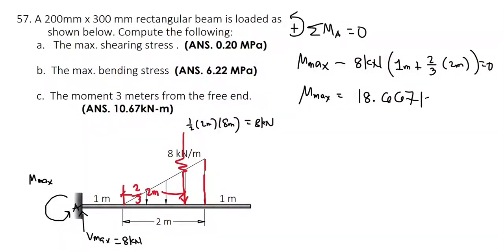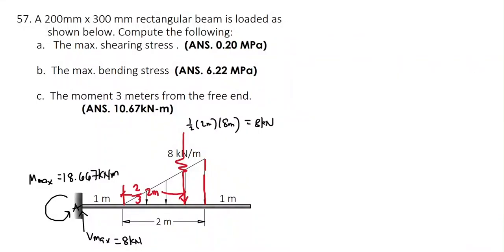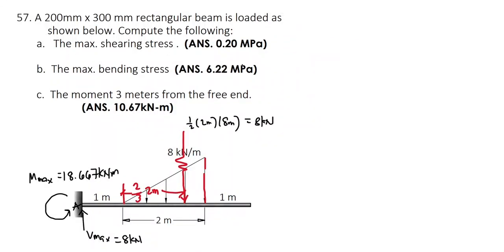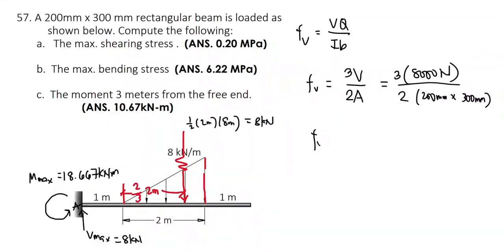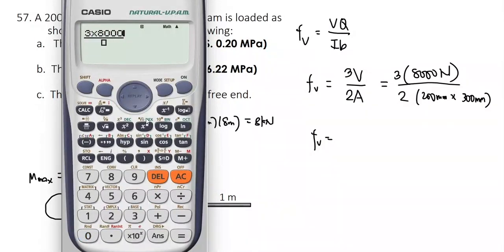Let's round this off to 3 decimal places. Now that we have our reaction at the support, we're going to solve for the maximum shearing stress. For the shearing stress, the formula is τ = VQ/IB. But since this is a rectangular beam, we can use the derived formula: maximum shearing stress equals 3V divided by 2A. That is 3 times 8,000 N divided by 2 times 200 mm times 300 mm, which is equal to 0.2 MPa.